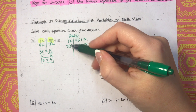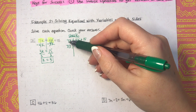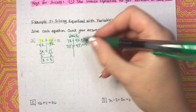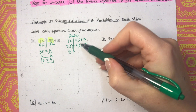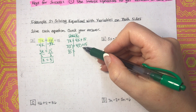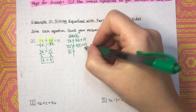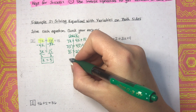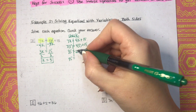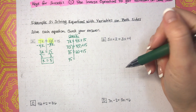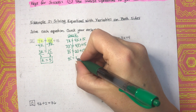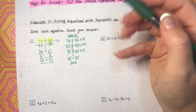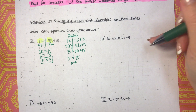Simplifying the left side: 7 times 5 is 35. On the right side, there's multiplication and addition — order of operations says multiply first: 4 times 5 is 20 plus 15. Then 20 plus 15 is 35. So 35 equals 35 — a true statement. That means our solution k equals 5 is the solution to the original equation.